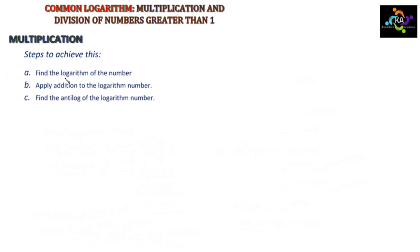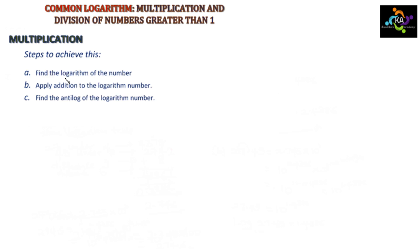The three steps are: first, find the logarithm of the numbers you are given to multiply. Second, for multiplication, add the logarithm values — apply addition to the logarithm numbers. Third, find the anti-log of the result of the logarithm addition.